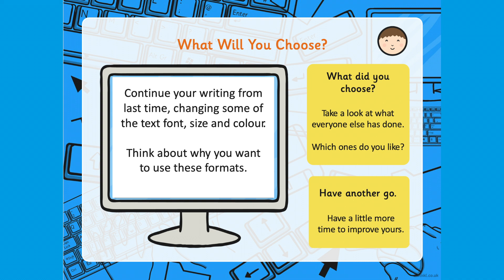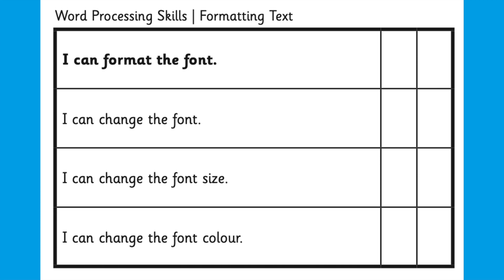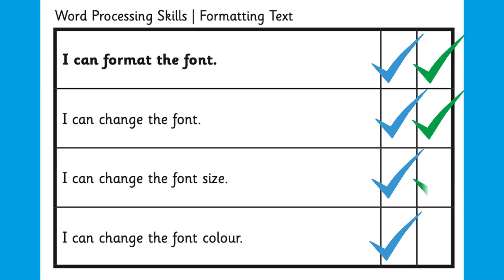Children are then given the opportunity to reflect on their own learning. This is a great way for them to self-assess and for you to see if there's anything that needs to be covered in more detail. This can also be achieved by using our success criteria grid found within the pack. Children can place a tick next to their 'I can' statements that they feel confident about, and you can then place a tick next to theirs if you feel that they have understood the concept.